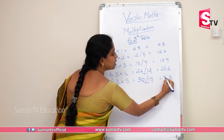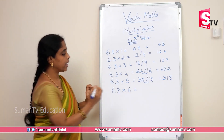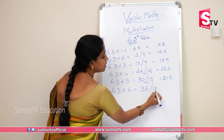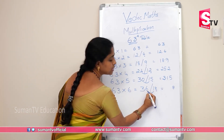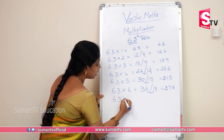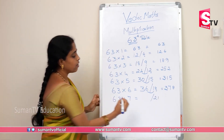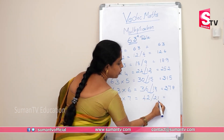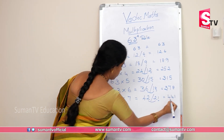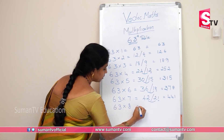63 into 5: 5×3 = 15, 5×6 = 30. Write 5 here, carry 1, then 30 plus 1 = 31. So 315. 63 into 6: 6×3 = 18, 6×6 = 36. Last digit 8, add 1 with 36: 36 plus 1 = 37, so 378. 63 into 7: 7×3 = 21, 7×6 = 42.